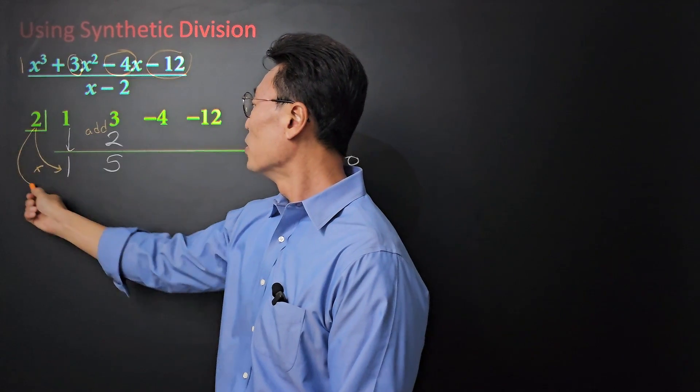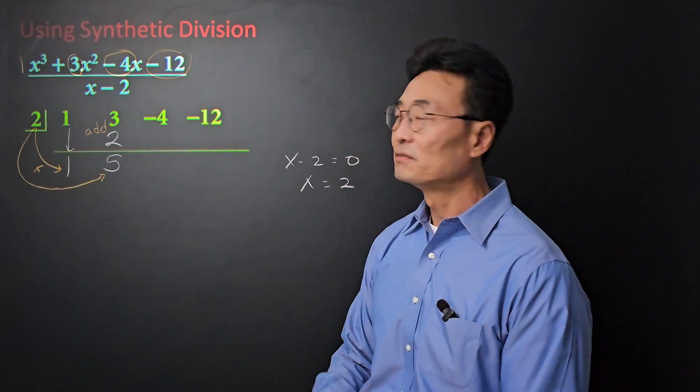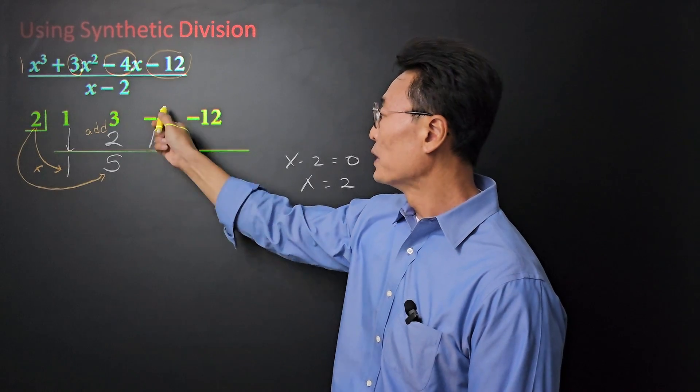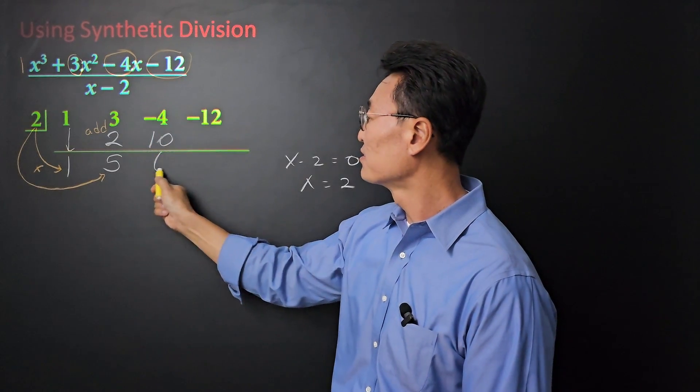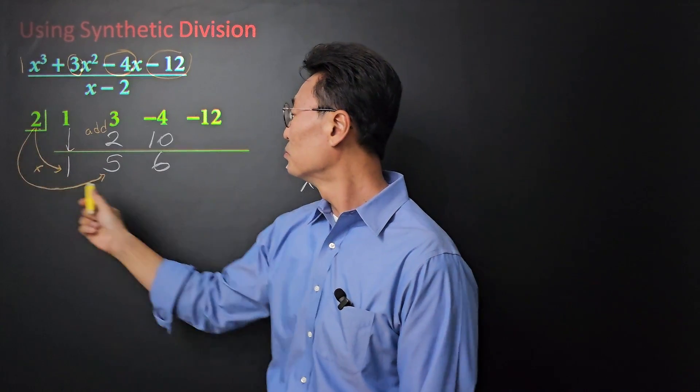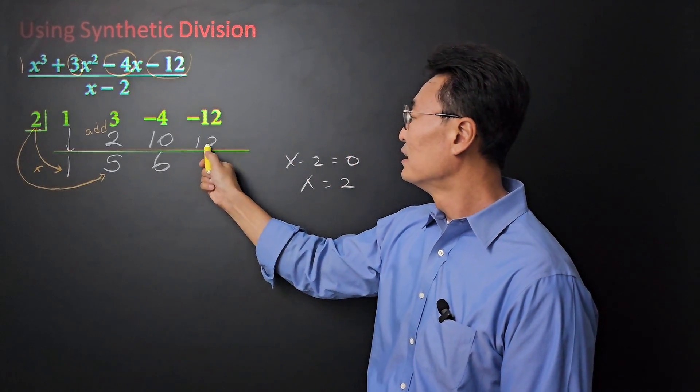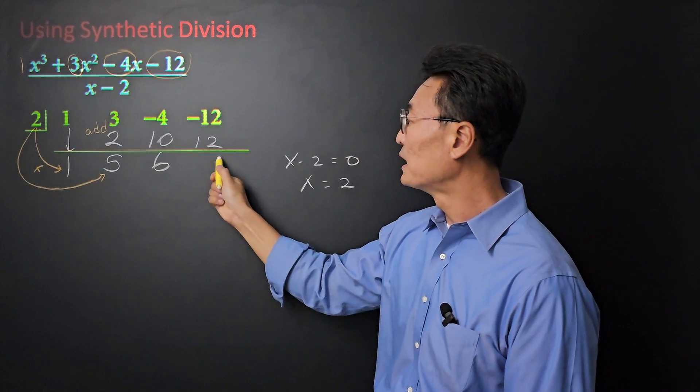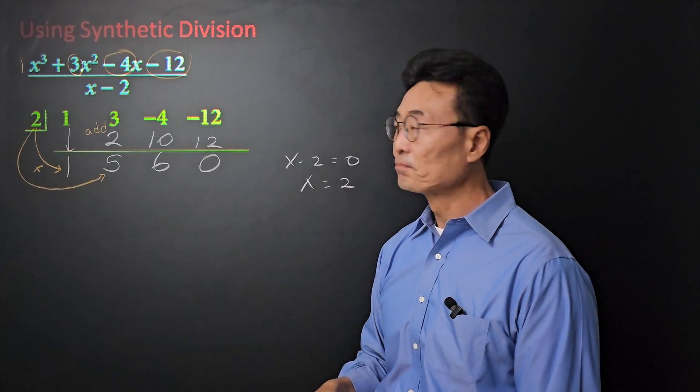Take the 2, multiply it to the 5, giving us a 10. We add up and down, we get a 6, and finally, taking that 2, multiplying it to the 6, we get a 12, add up and down, and we get a 0.